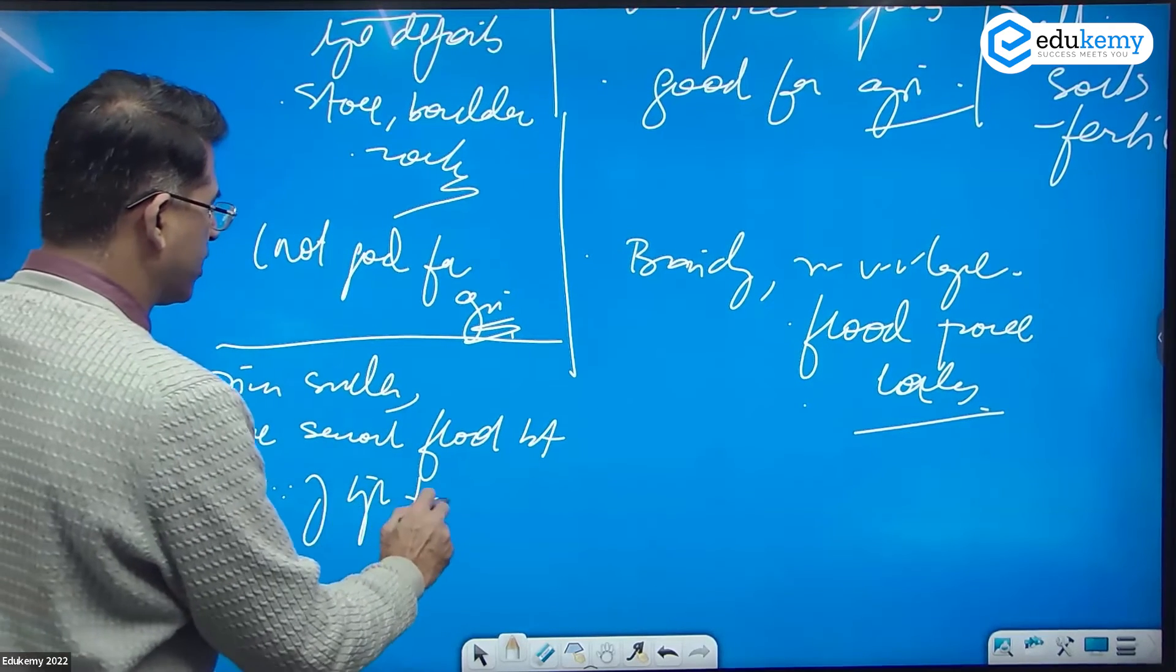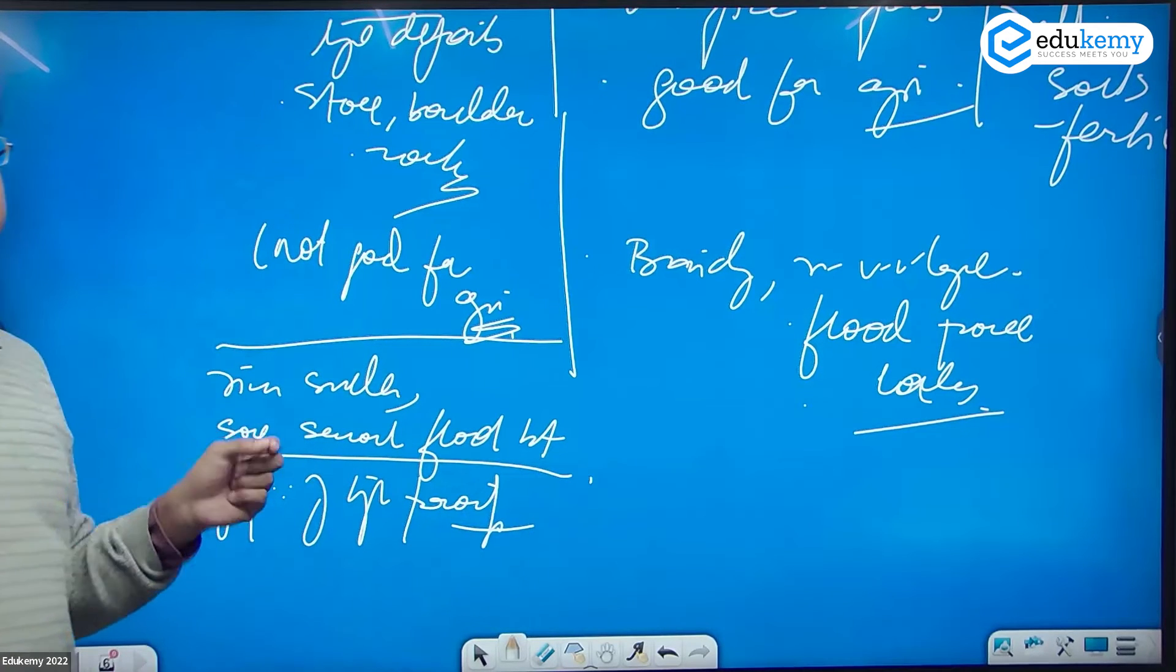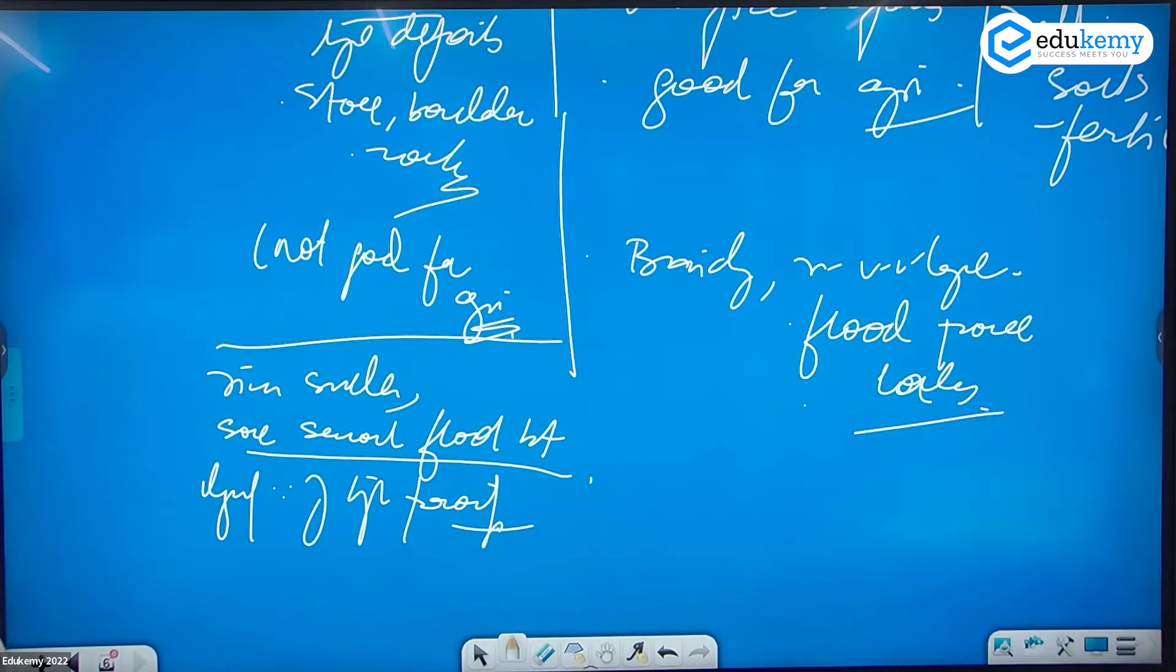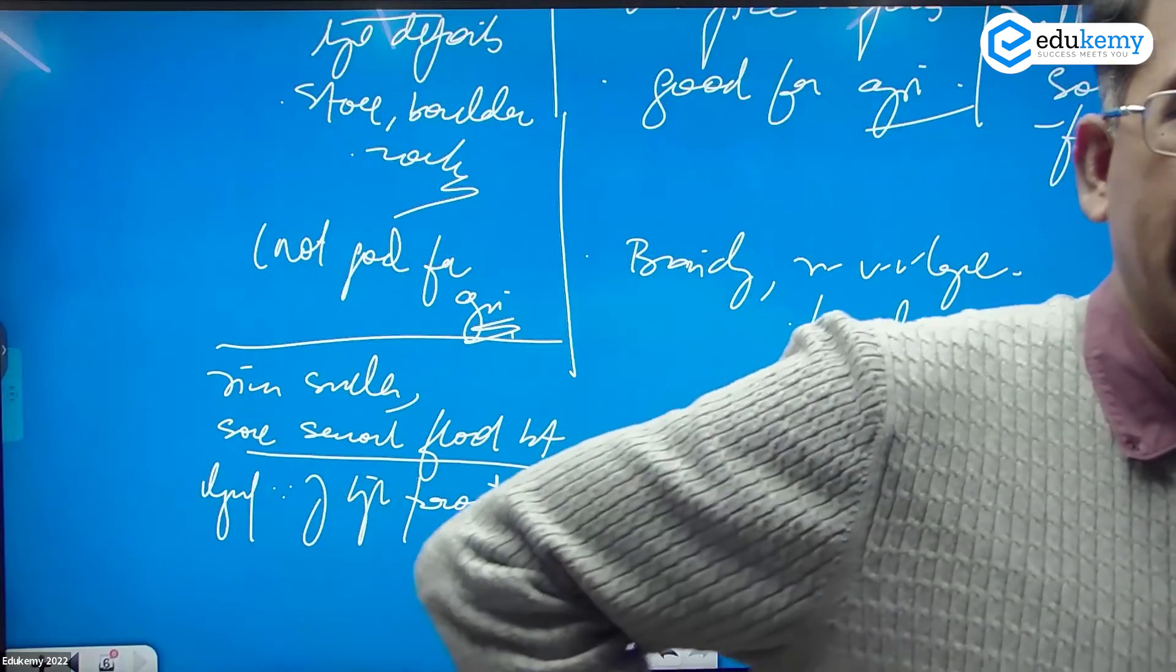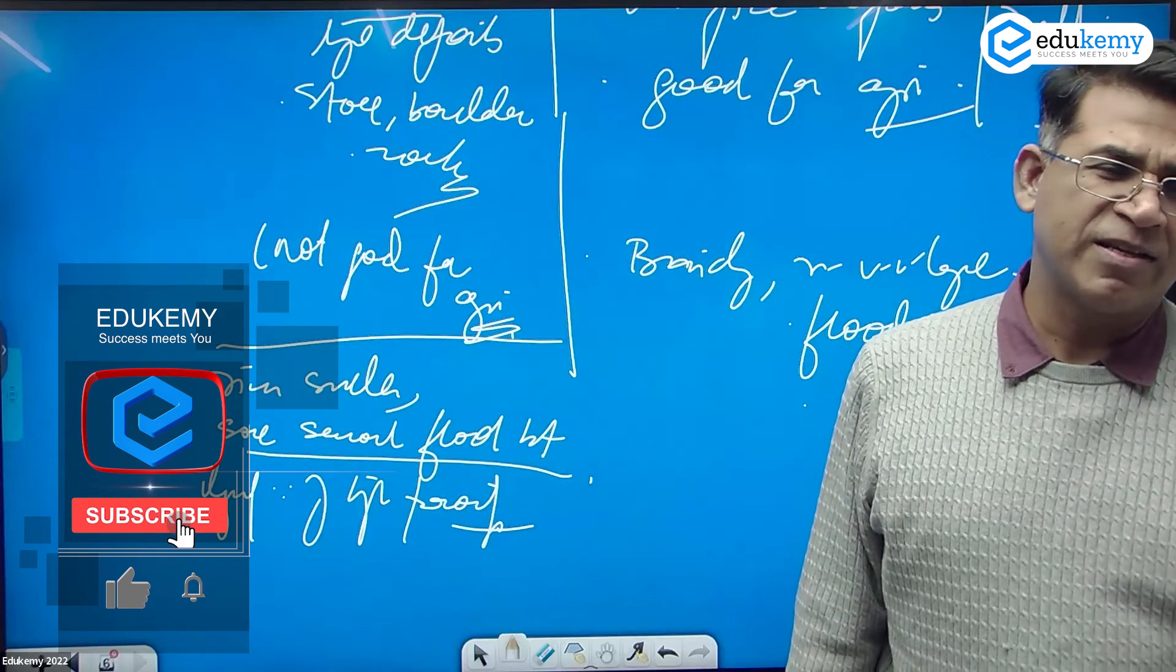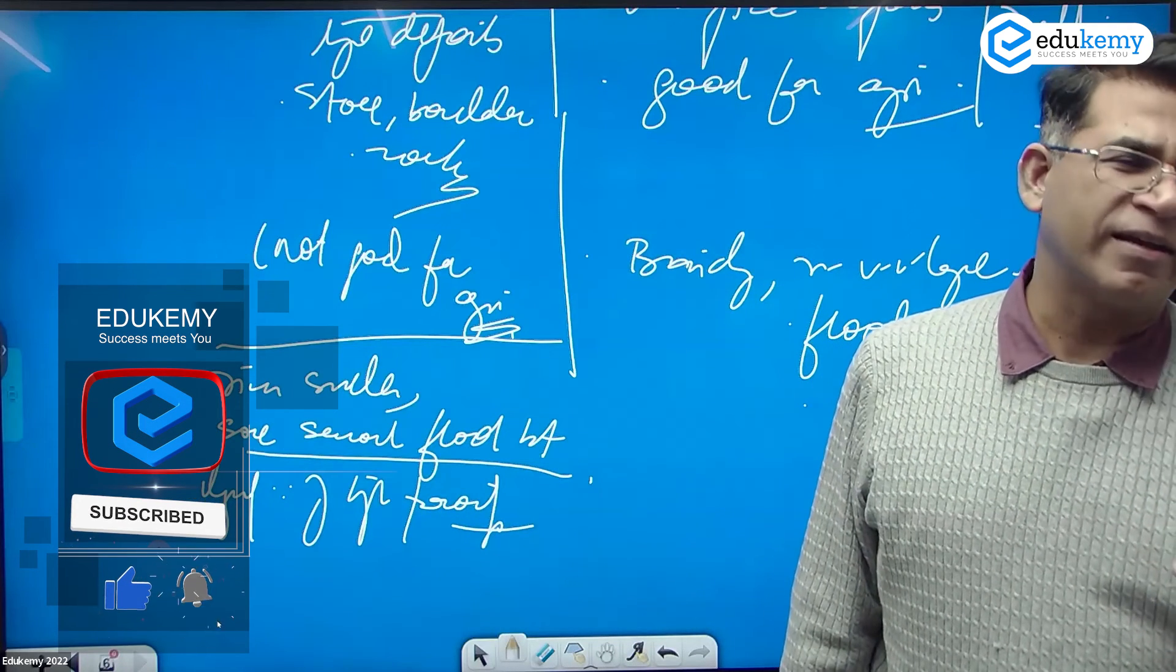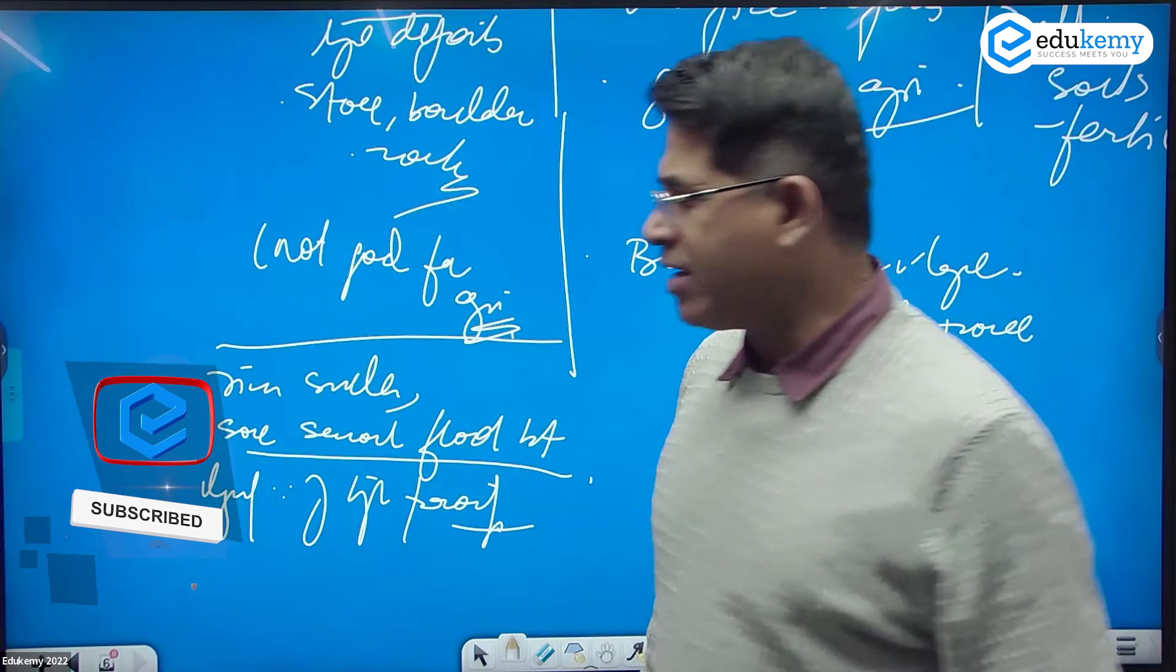They might have some seasonal floods, but because of very high porosity (P-O-R-O-S-I-T-Y), the rivers are not visible. The rivers percolate underground.